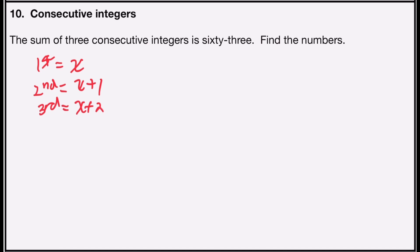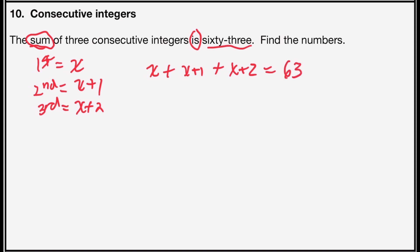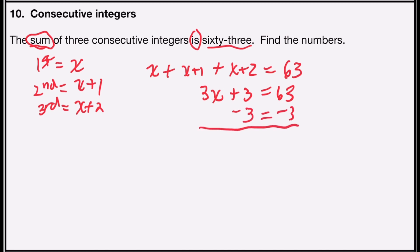Now I'm going to write my equation. I want to find the sum of these. So the first integer is x, plus the second integer x plus one, plus the third integer x plus two. Here's my word 'is' for my equal sign, and that has to total to 63. Now I'll simplify the left side: x plus x plus x is 3x, plus 3 equals 63. Subtract 3 from both sides — 3 minus 3 is 0, and 63 minus 3 is 60.